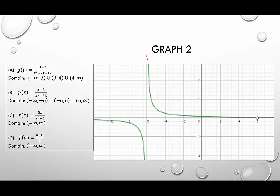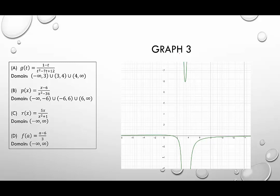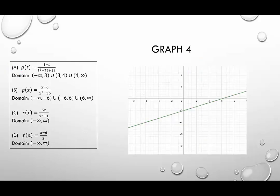In graph 2, there's a vertical asymptote at x equals negative 6, and a hole at x equals 6 — the hole coordinates are (6, 1/12). So graph 2 matches letter b. In graph 3, there are vertical asymptotes at x equals 3 and x equals 4, matching letter a. And lastly, graph 4 is a straight line with no restrictions, which is letter d.